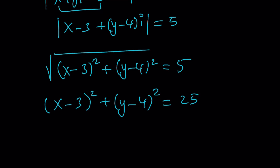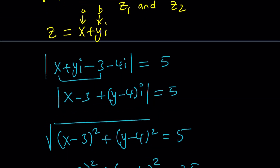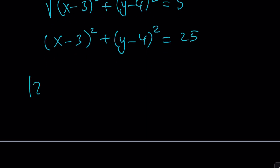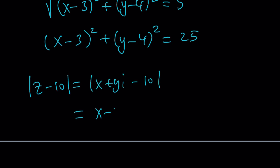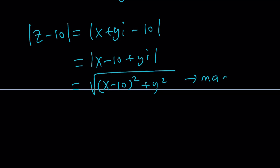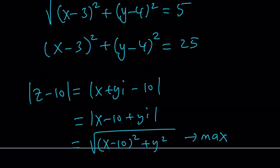Under these conditions, for these X and Y values, we want to know the maximum value of the absolute value of Z minus 10. Since Z is X plus Yi, this becomes the square root of (X minus 10)² plus Y². This might be a little hard without getting into the analytical geometry here.